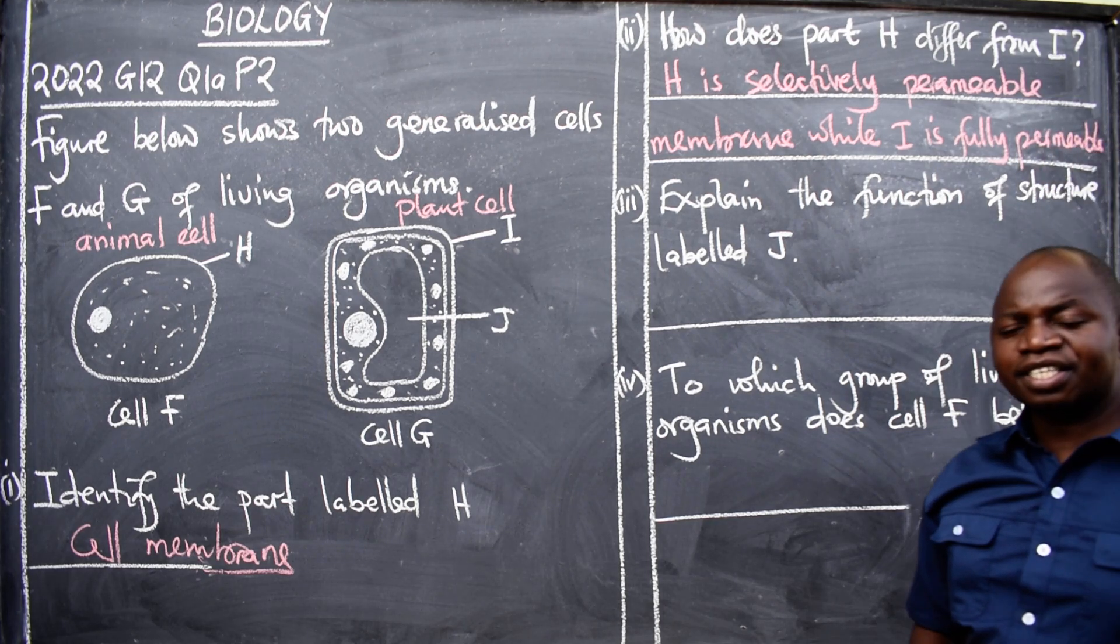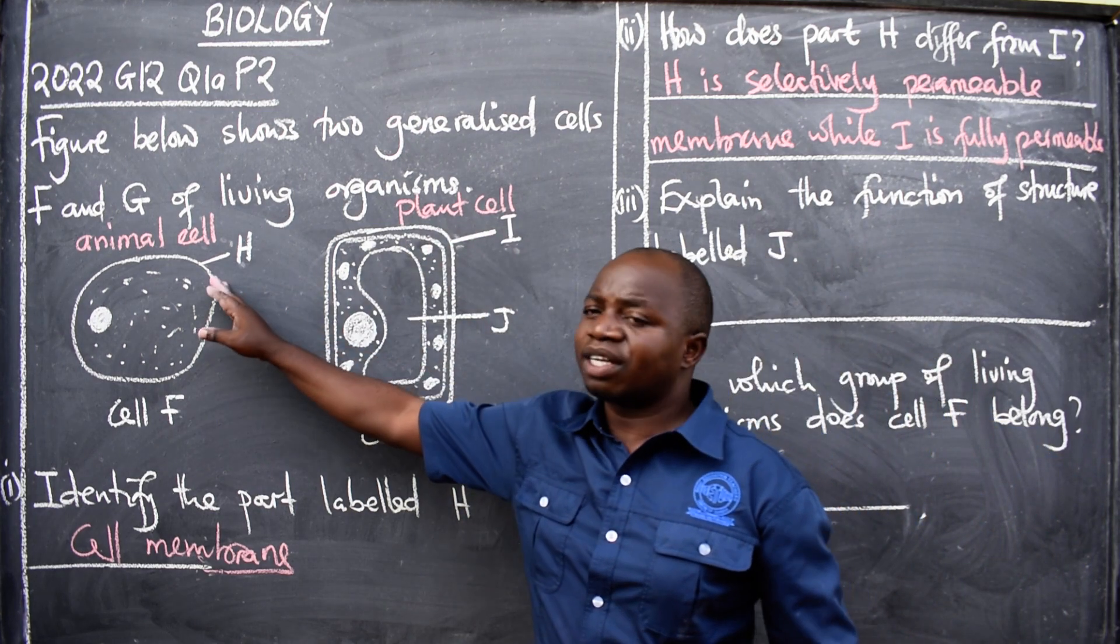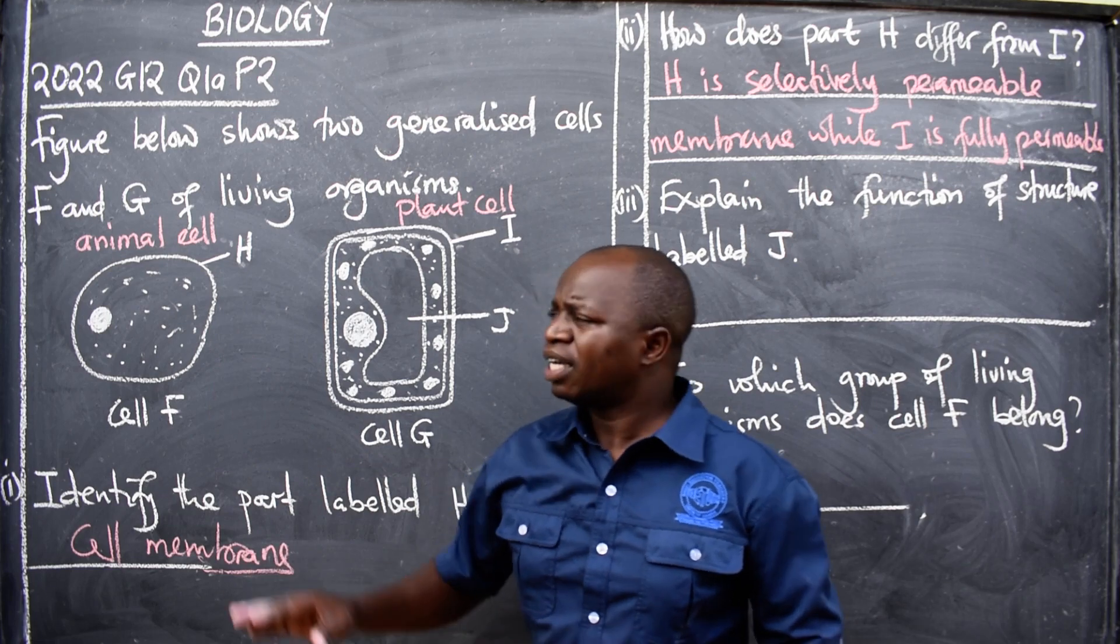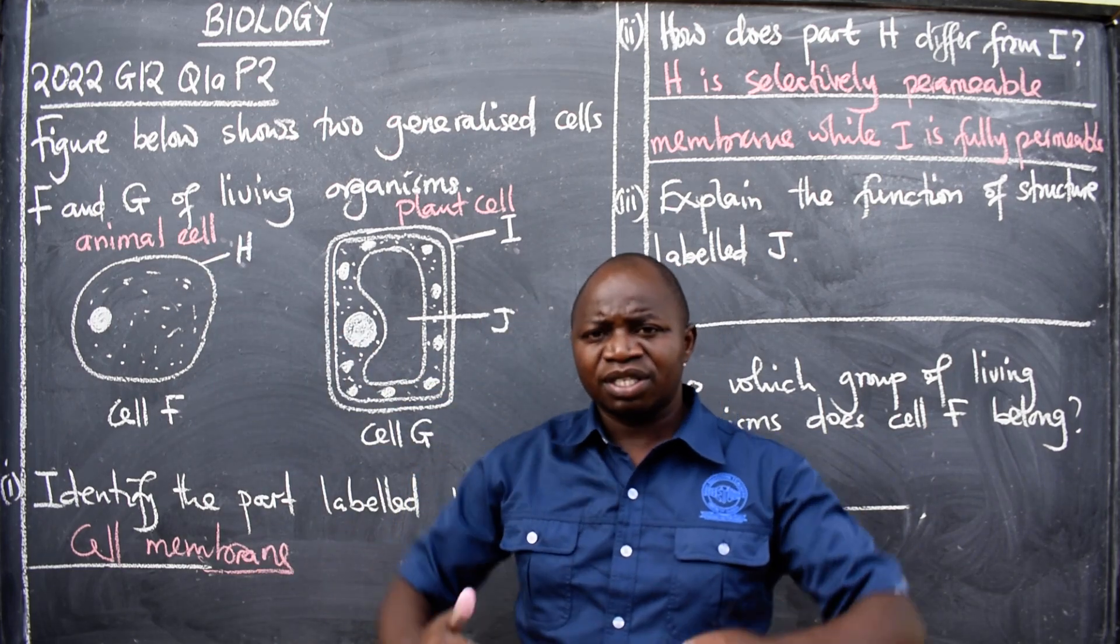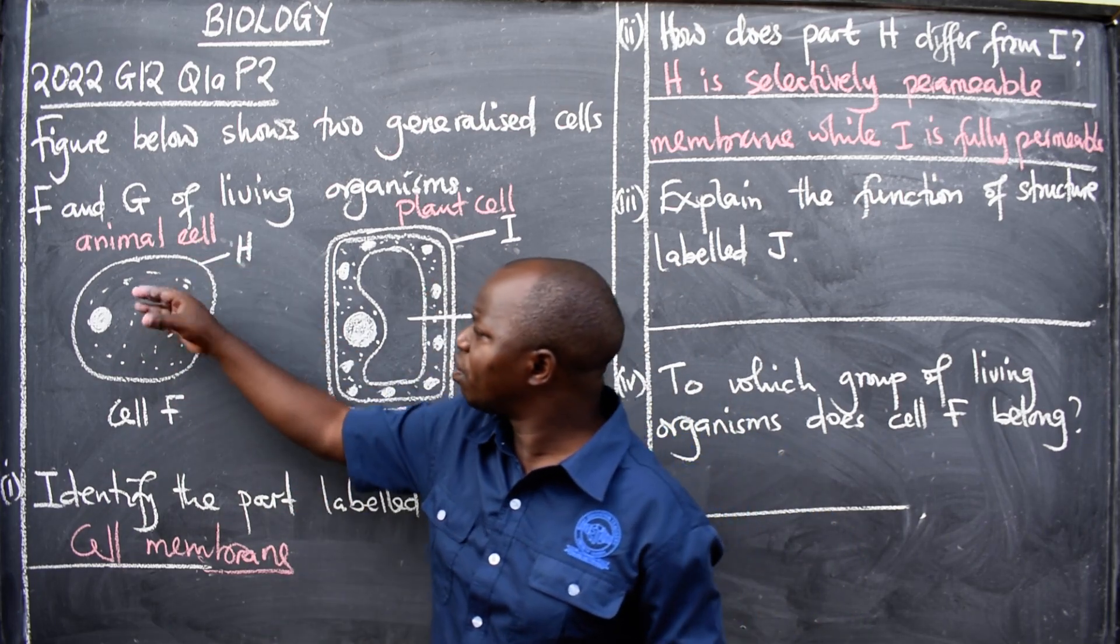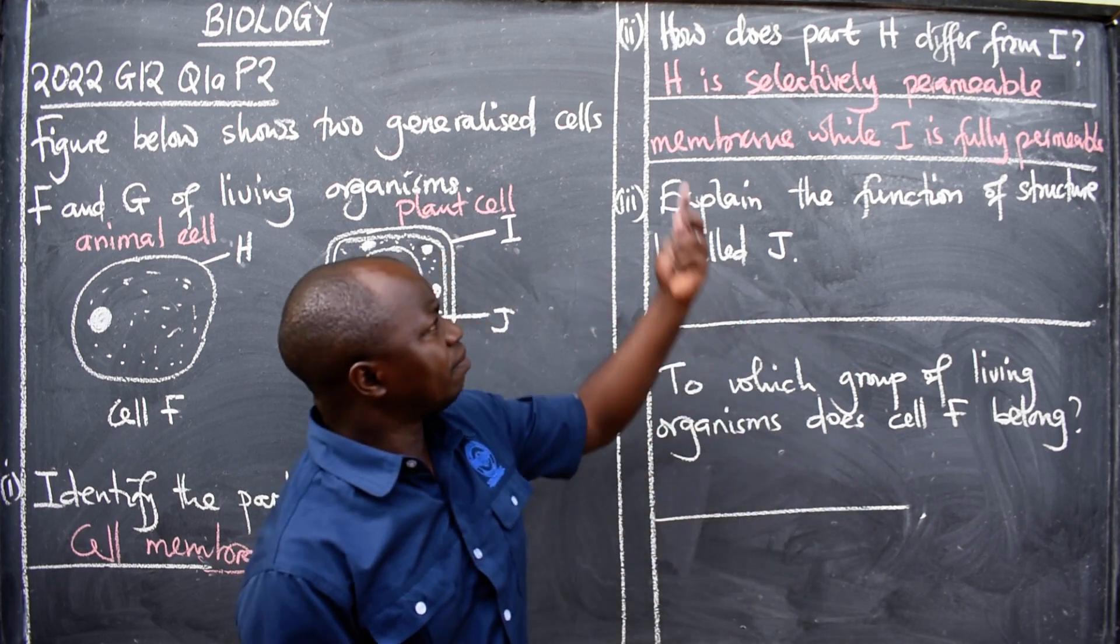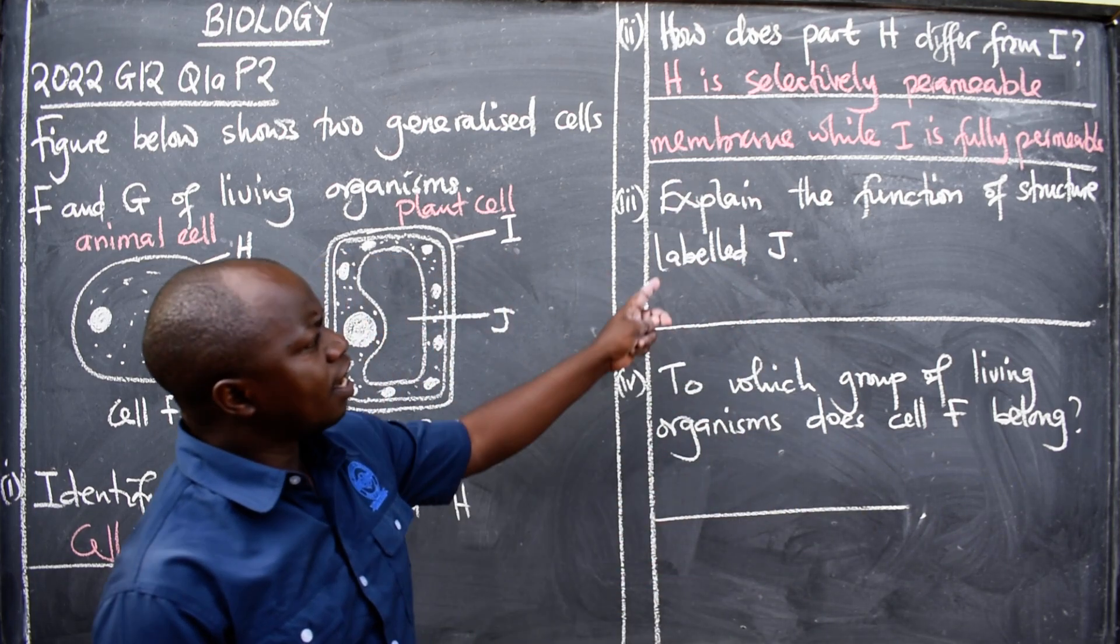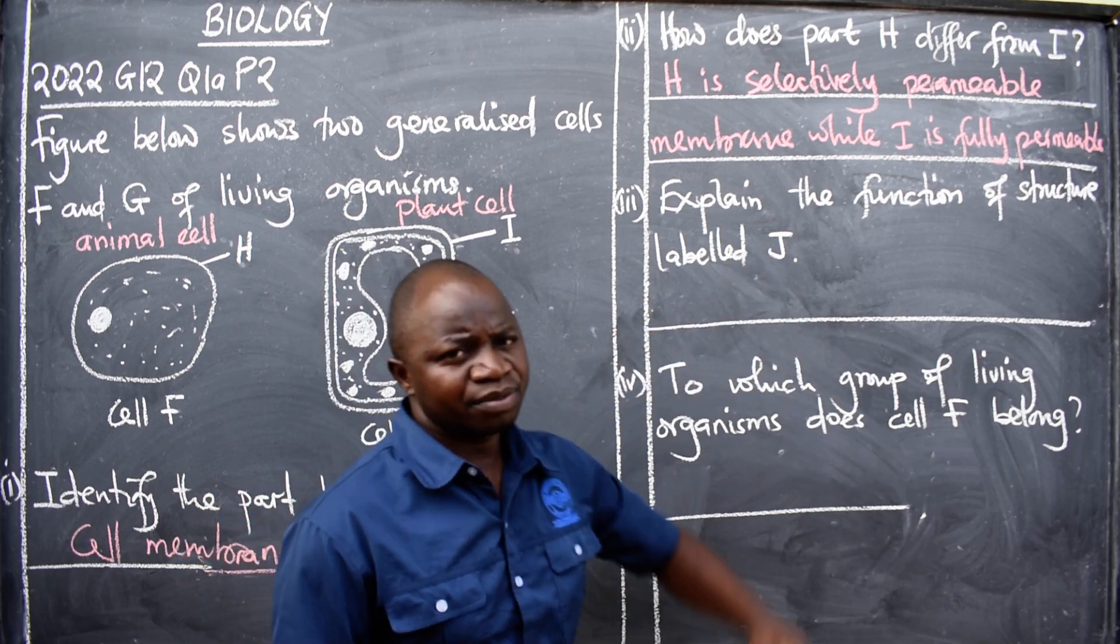While this one, I, is fully permeable. So you can say it in that way. This one is fully permeable, then this one is selectively permeable. It doesn't allow everything to go in the cell, it's selective. So it's able to allow certain substances to go and leave the cell. So it can be written in that manner.